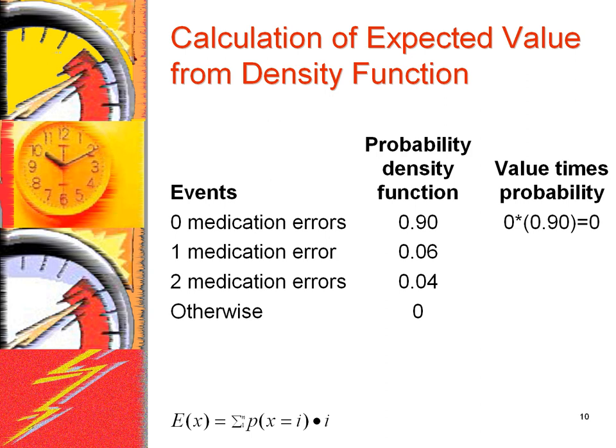To calculate the expected value, first we multiply the value of each event by its probability. In the first row, zero medication errors is multiplied by the 90% chance to obtain zero. In the second row, 6% is multiplied by 1 to obtain 0.06. And 4% is multiplied by 2 to obtain 0.08.